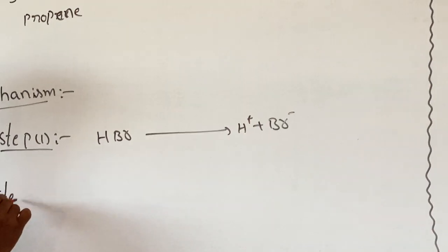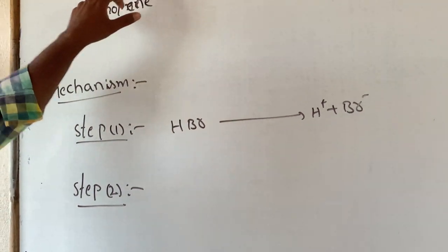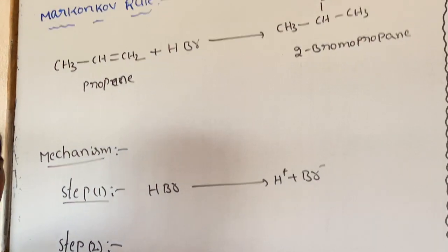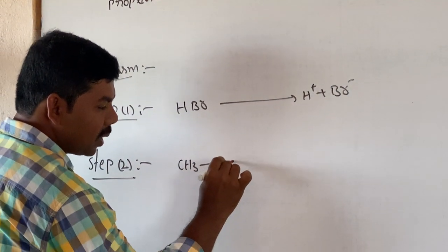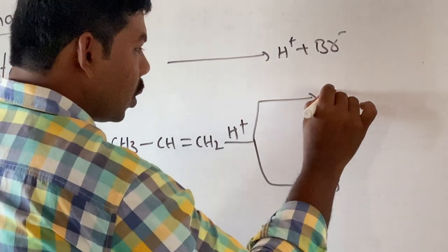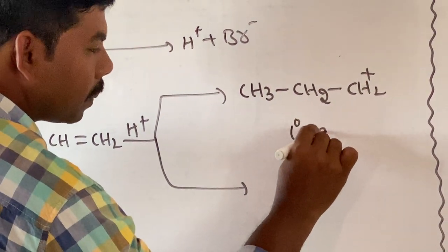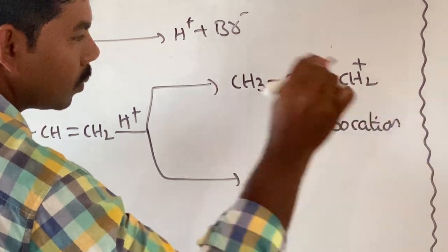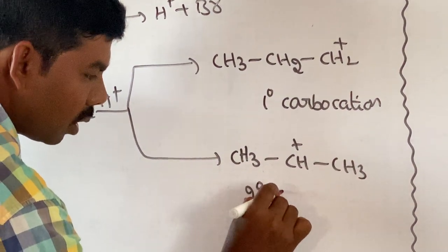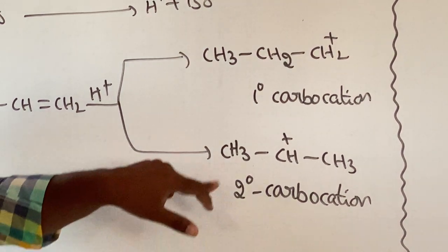Step 2: the unsymmetrical alkene propene reacts with H⁺ to give two products — a primary carbocation and a secondary carbocation. CH3-CH=CH2 attacking with H⁺ gives a primary carbocation, and CH3-CH⁺-CH3 is a secondary carbocation.